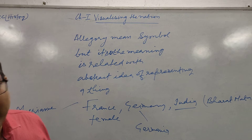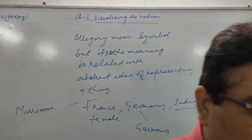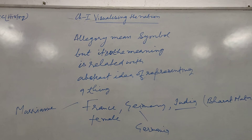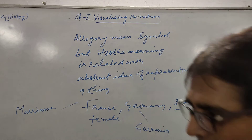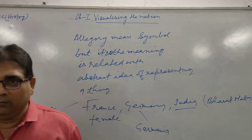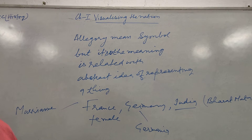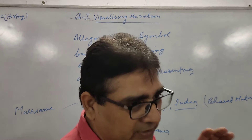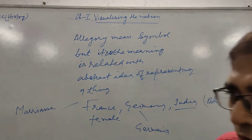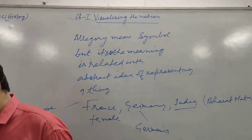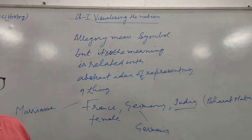Liberty was also an allegory — she is considered the goddess of freedom. These allegories were made by the people to influence others, showing that their country represents such a figure. This was an important thing in the nationalist movement, or you can say, the liberalist movement.